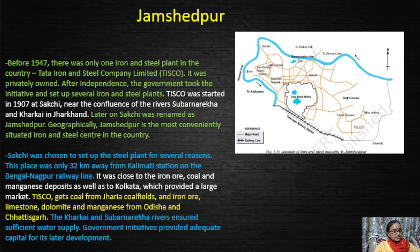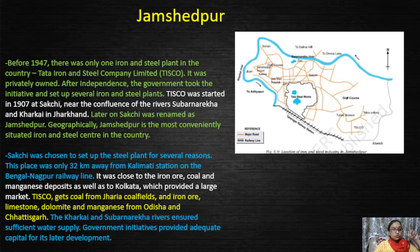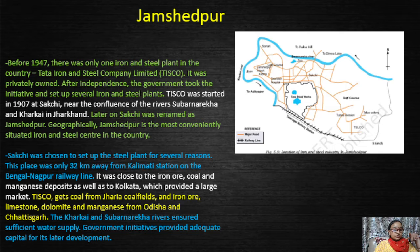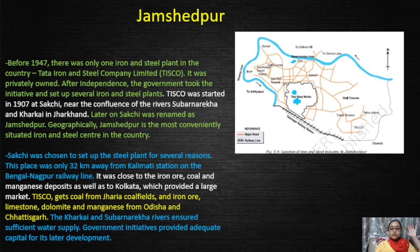Many iron and steel industries were established in 1907 at Sakchi, which is now Jamshedpur. The TISCO plant has been established where these two rivers — Subanrekha and Karkhai — join, because of their confluence. The second last line of the green color portion states: geographically, Jamshedpur is the most conveniently situated iron and steel industry in the country. So Jamshedpur is the best example of iron and steel industry establishment in the entire country.